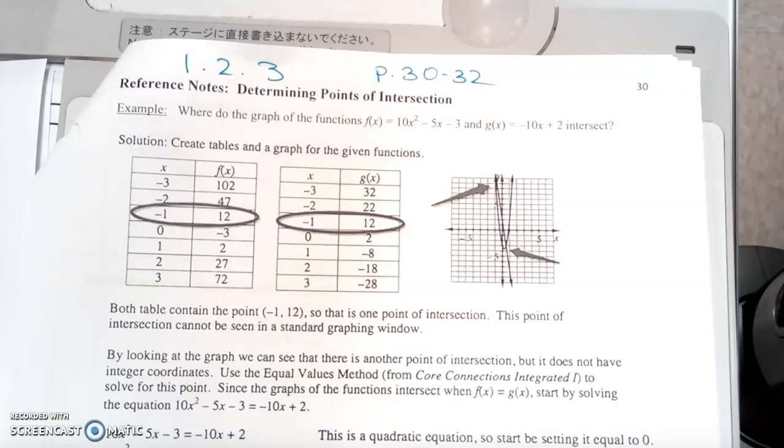By looking at the graph, we can see that there is another point of intersection, but it does not have integer coordinates. Use the equal values method from the core connections integrated 1 to solve for this point.